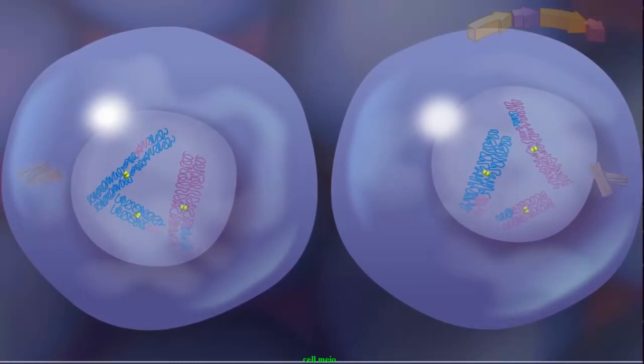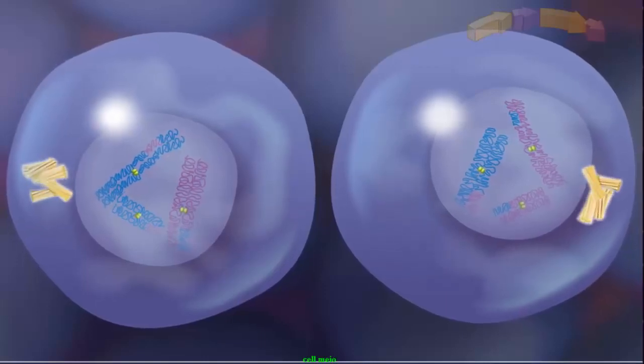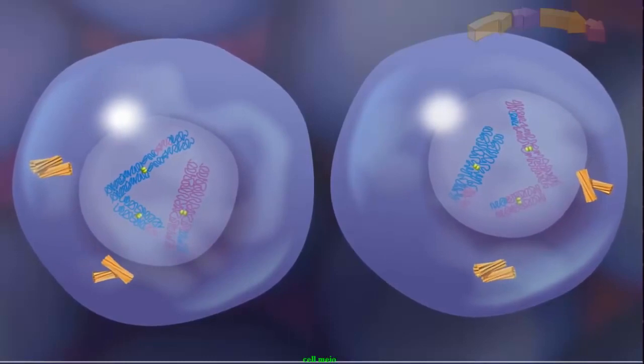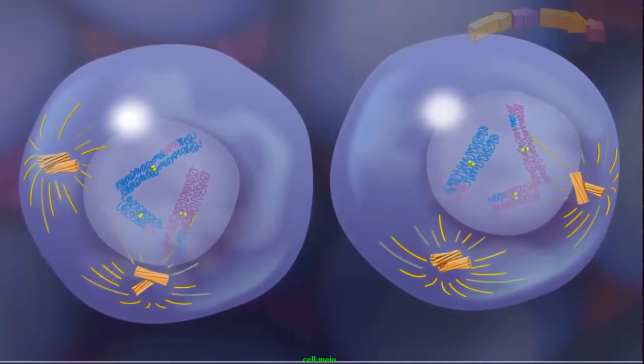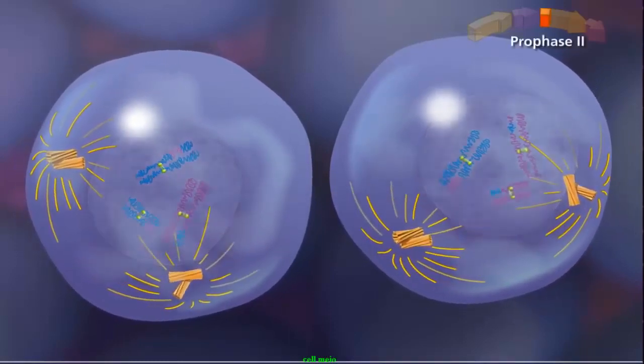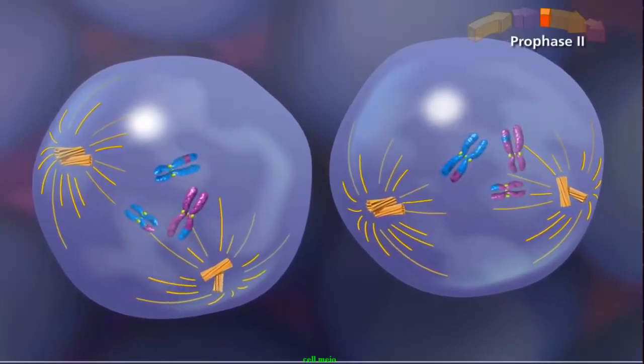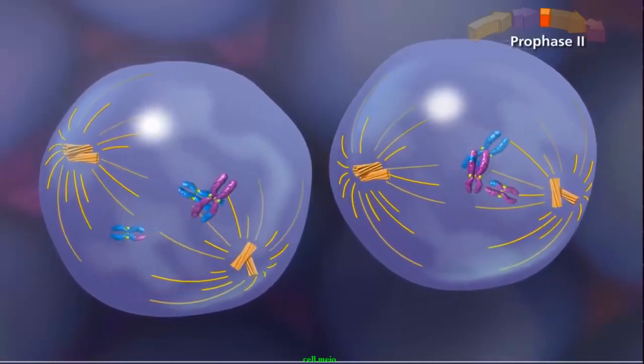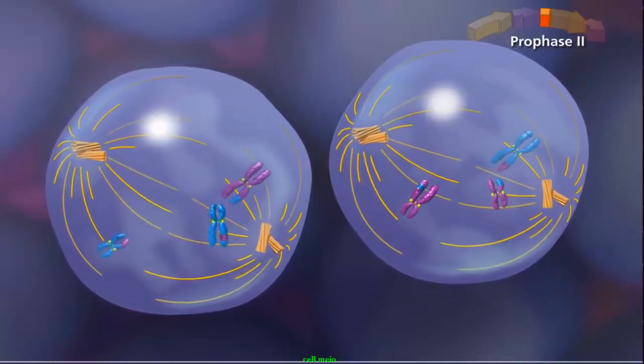meiosis II begins without the chromosomes going through another round of DNA replication. Centrioles again duplicate and begin moving to opposite poles of each cell. In prophase II, the sister chromatids condense while the spindle starts to form as the nuclear envelope disappears.